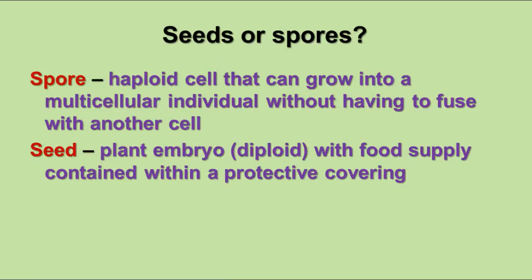Remember the difference between seeds and spores. A spore is a haploid cell that can grow into a larger multicellular individual without having to fuse with another cell, and that multicellular individual is also haploid. A seed, on the other hand, has a plant embryo, which is diploid because it's produced by the fusion of sperm and egg cells. The seed not only has the embryo, it also has a food supply contained inside a protective coating called the seed coat. Spores are haploid and seeds are diploid; the spore grows into a haploid plant, the seed grows into a diploid plant.